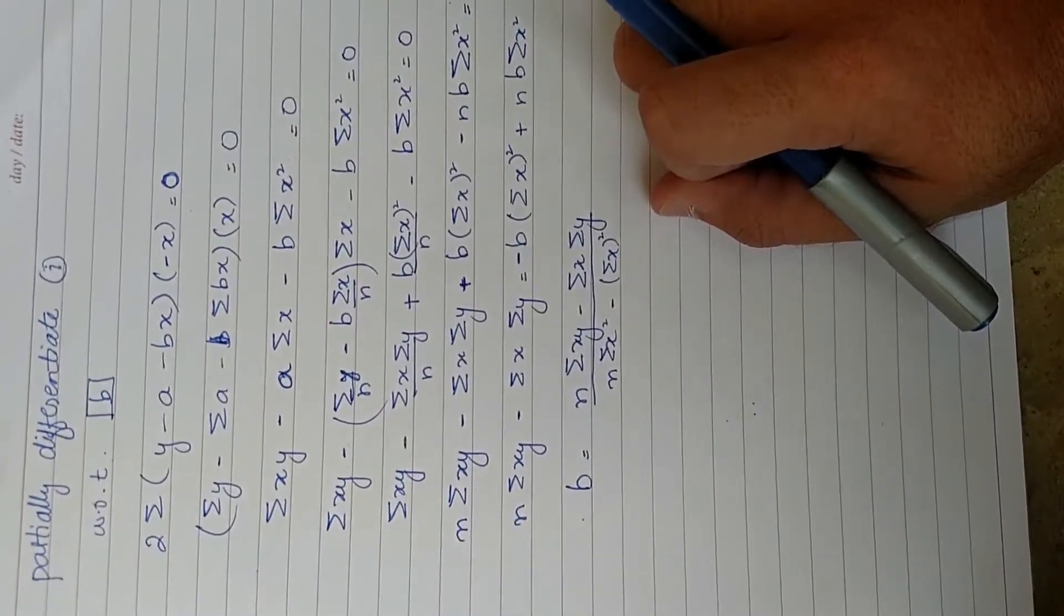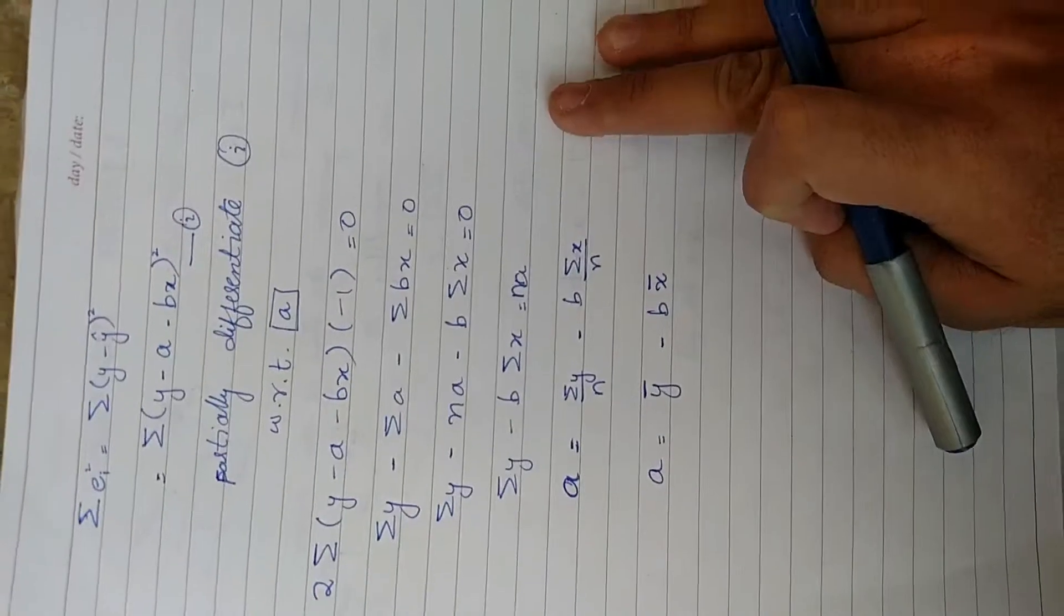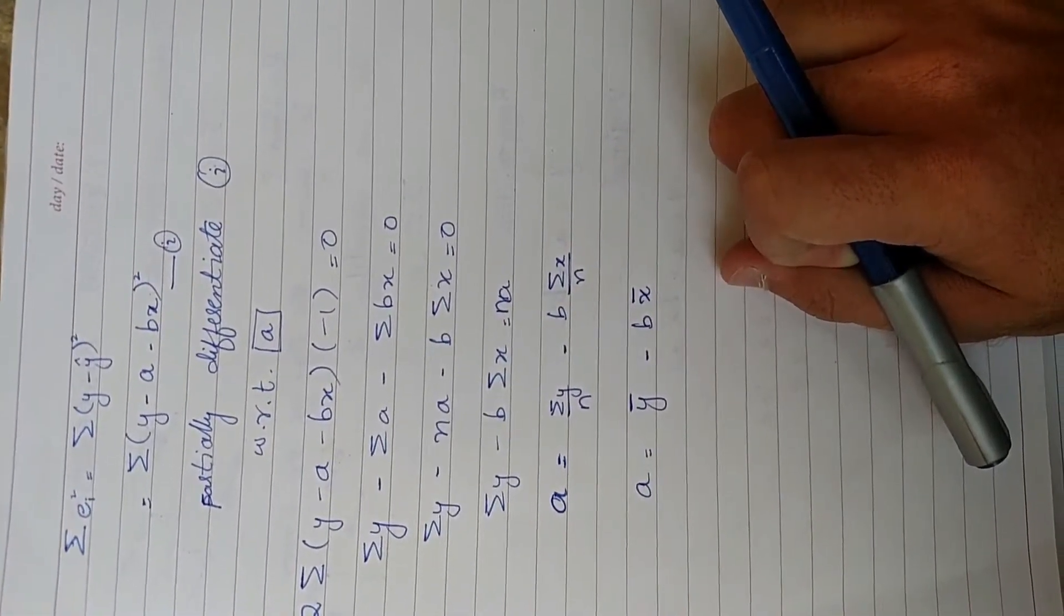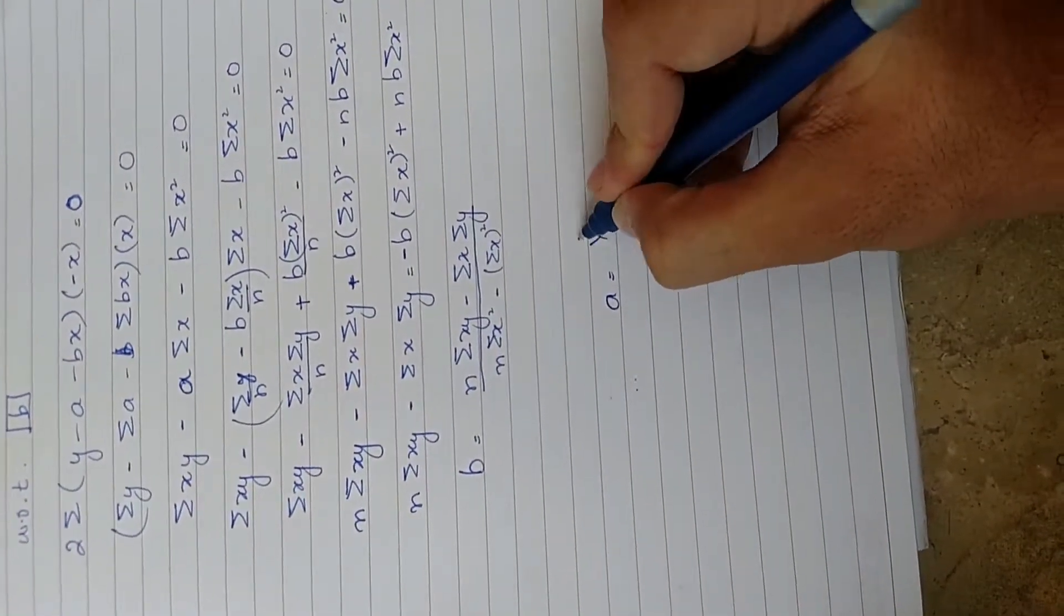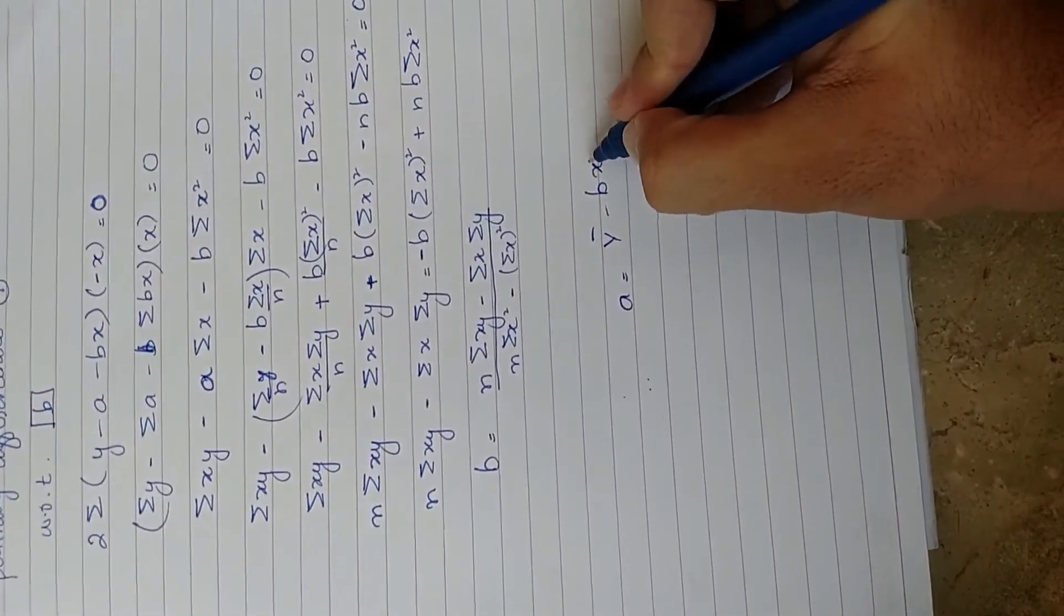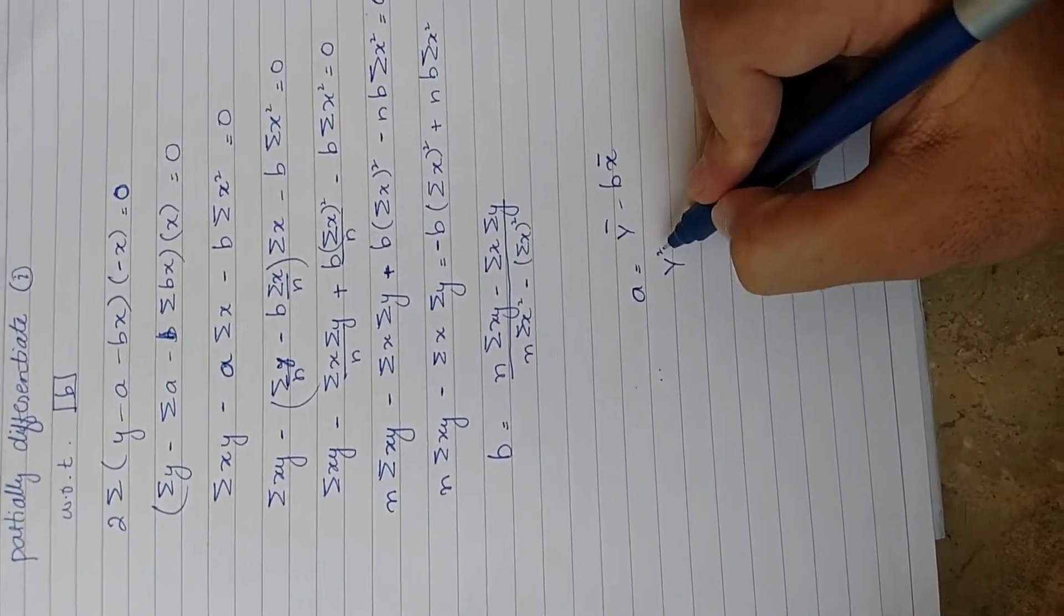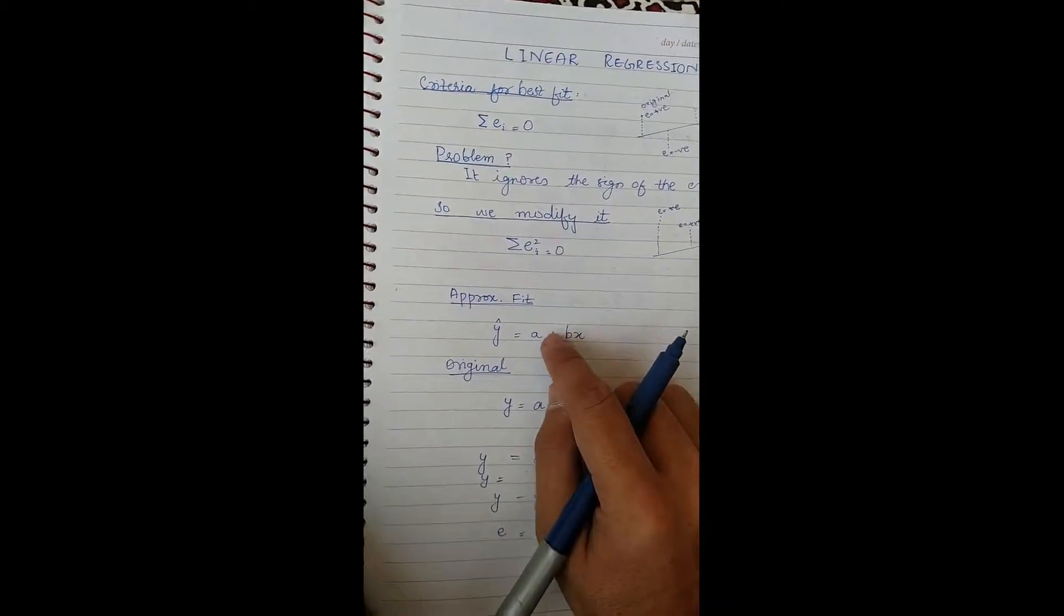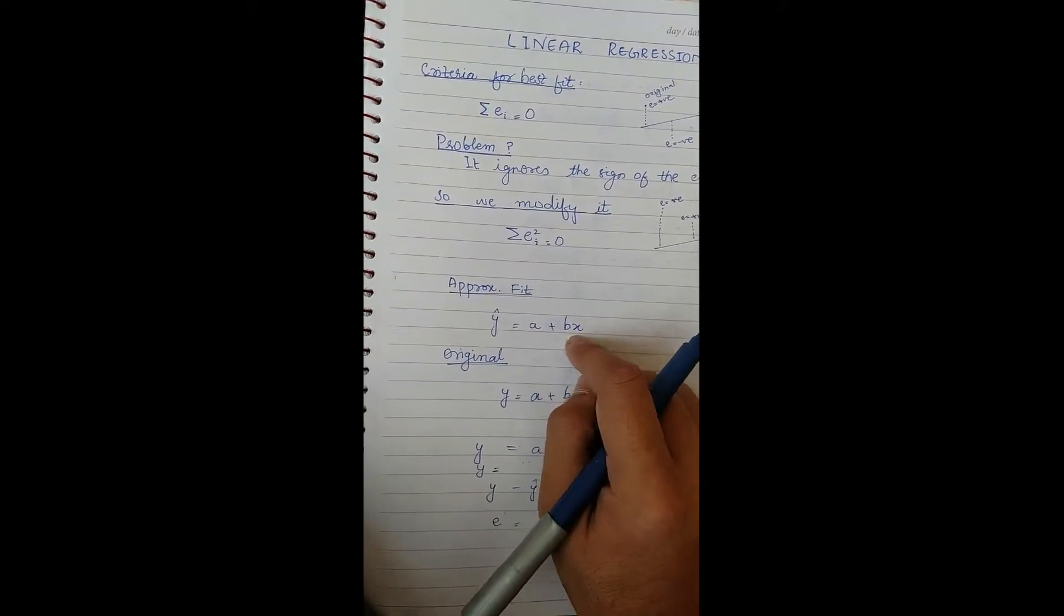a equals mean of y minus b times mean of x. We had y cap equals a plus bx. This is for the best fit line. Now after getting values of a and b, we will put these values here and get the equation of the line. Thank you.